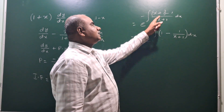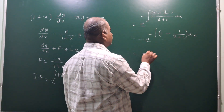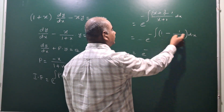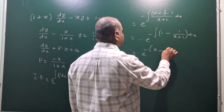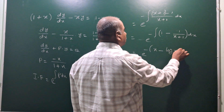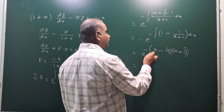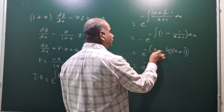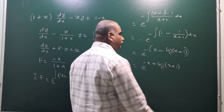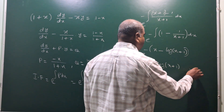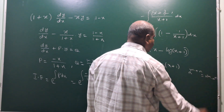This function can be resolved into two terms: (x plus 1) by (x plus 1) becomes 1, minus 1 by (x plus 1). So we get e to the power of minus times the integral of 1 dx minus integral of 1 by (x plus 1) dx, which gives e to the power of minus times x minus log(x plus 1).